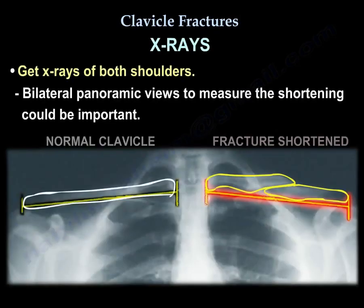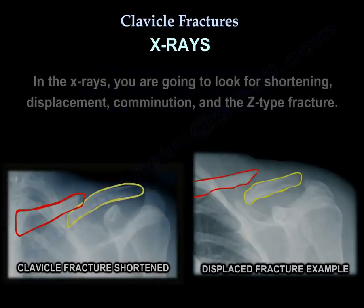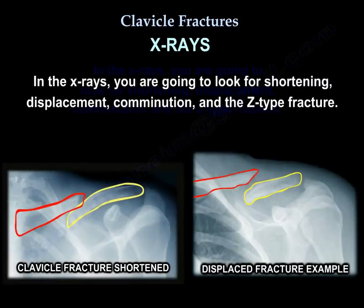Get X-rays of both shoulders; bilateral panoramic views to measure the shortening can be important. Get an AP and 20-degree cephalad upshot view X-ray of the clavicle. On the X-ray, look for shortening, displacement, comminution, and the Z-type fracture.